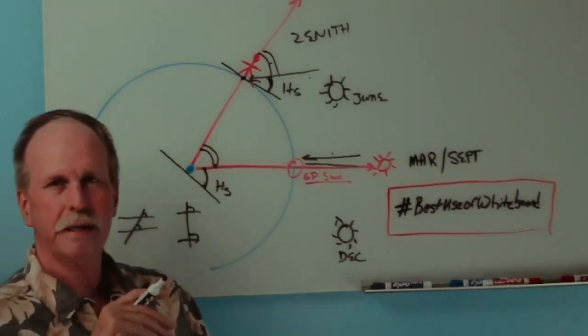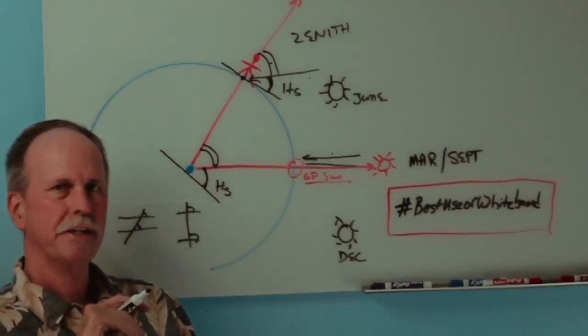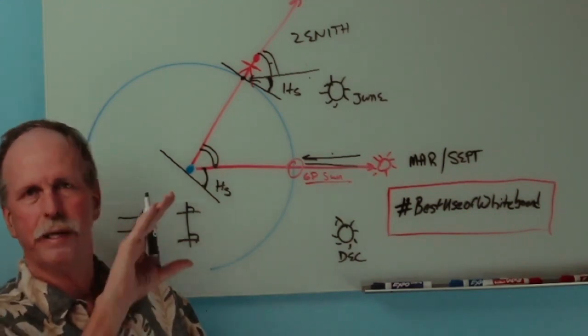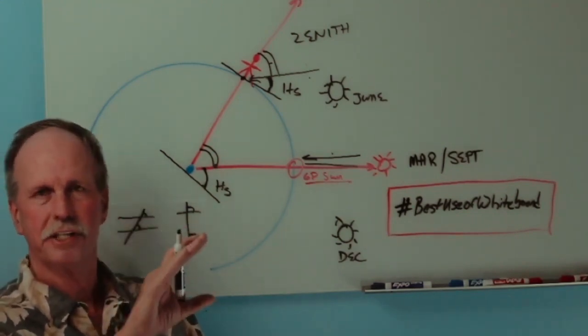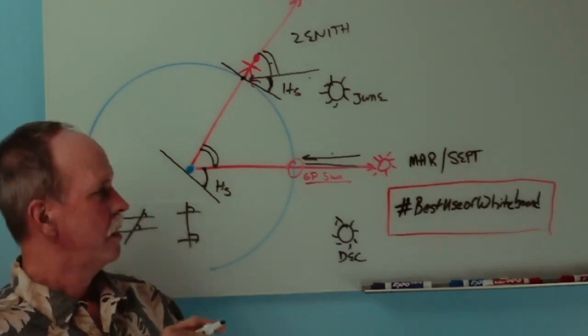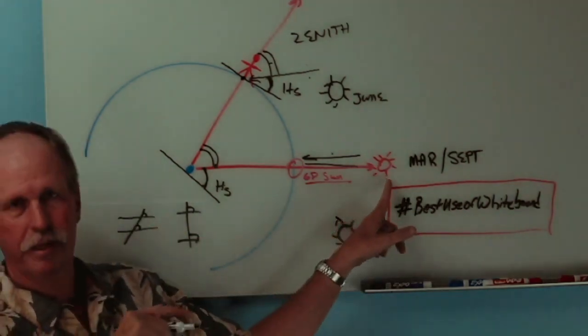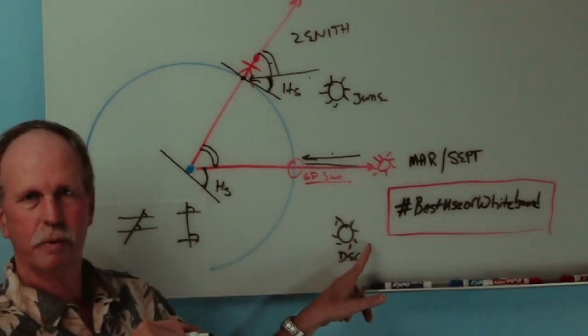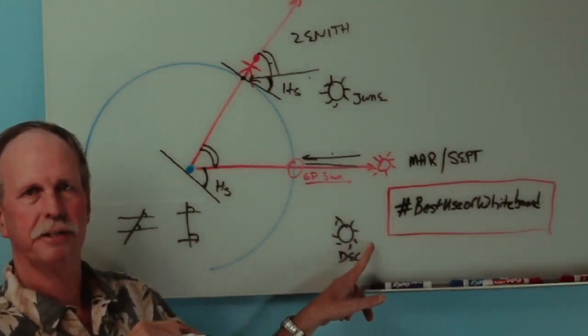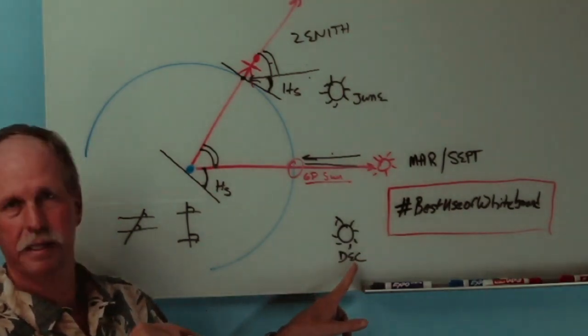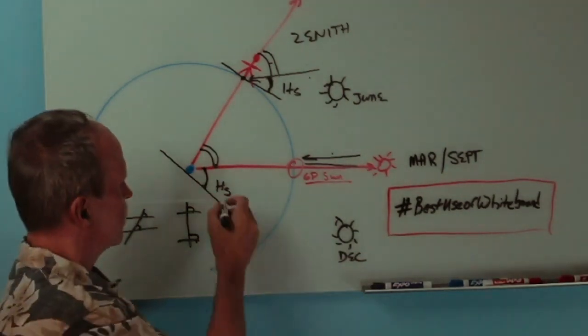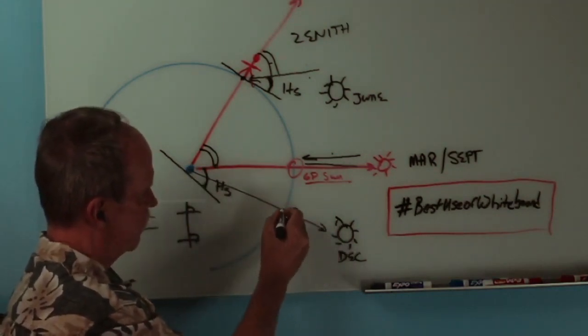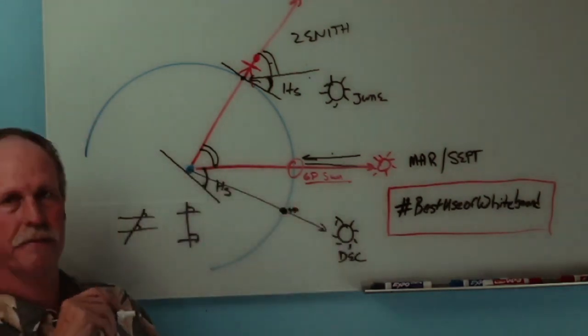There's one more thing that we need to understand about the measurement of latitude. With our sextant, we measure the distance, the angle, between a celestial body like the Sun and the horizon. What if the Sun's not directly over the equator? What if it's down here at 23 and a half degrees south latitude, which is where it would be at the December solstice? So that would be the new geographic position of the Sun.